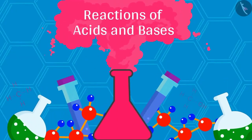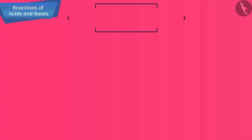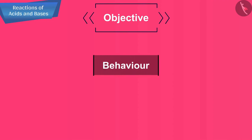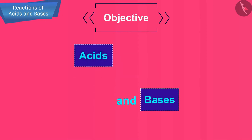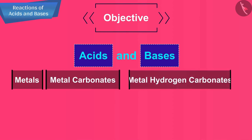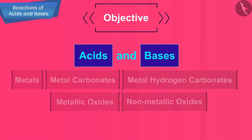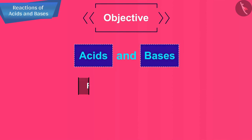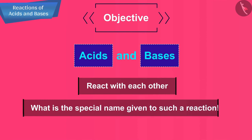Hello friends, welcome to this video session. The topic that we are going to cover in this session is reactions of acids and bases. In this video lesson, we will understand the behavior of acids and bases in a better way and understand how acids and bases react with metals, metal carbonates, metal hydrogen carbonates, metallic oxides and non-metallic oxides. We will also learn how acids and bases react with each other and what is the special name given to such a reaction.